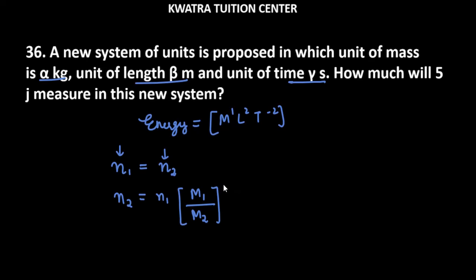So here you will have 1, because the mass power is 1. Similarly, you will write for L: L1 over L2 raised to power 2. And similarly, you will write for T: T1 over T2 raised to power minus 2. Now what we have done here is we have expressed n2 in terms of these ratios.